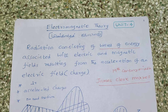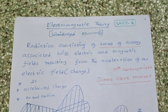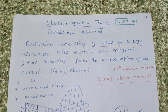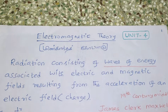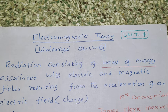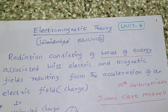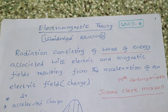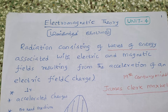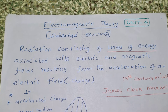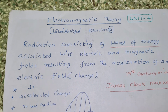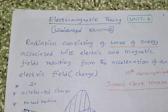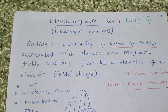Welcome teachers. I am going to talk about TRB physics. Unit number 4 is Electromagnetic Theory. Electromagnetic theory — radiation consisting of waves of energy associated with electric and magnetic fields resulting from the acceleration of an electric charge.